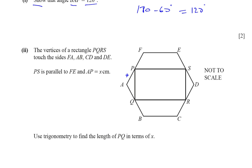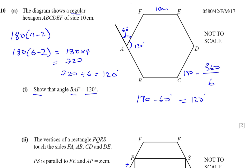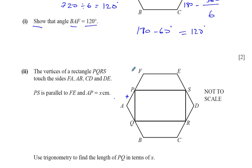We know AP equals x and AF equals 10, so the remaining part FP is 10 minus x. Since PS is parallel to FE and the interior angle at A is 120 degrees, this angle must be 60 degrees. Our objective now is to find PQ — let's call it y — in terms of x.